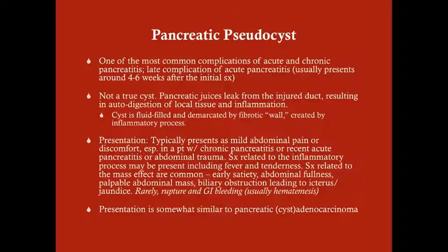A pseudocyst is caused by pancreatic juices leaking out of an injured duct. This is problematic for two reasons: first, juices leak out around the pancreas; second, those juices — amylase and lipase — are enzymatic and break down carbohydrates and fats, causing auto-digestion of local tissue and inflammation. This is not a true cyst — it is a pseudocyst because it is not lined with endothelium but rather a fibrotic wall of granulation tissue formed by the inflammatory process.